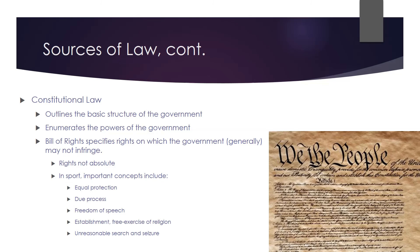Another source of law is constitutional law. The U.S. Constitution was adopted in 1787, and the Bill of Rights — the first ten amendments — was adopted in 1791. Each state also has a Constitution. The basics of what a Constitution does is outline the structure of government: the legislative branch (the House and Senate — that's Congress), the executive branch (the presidency), and the judicial branch (topped by the Supreme Court).